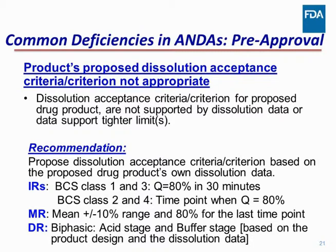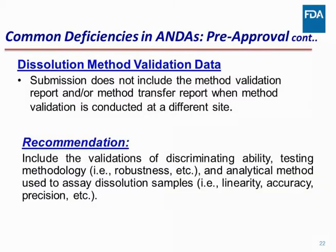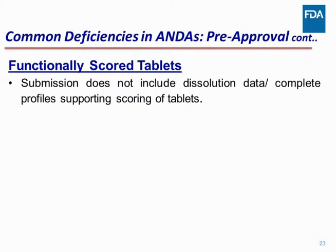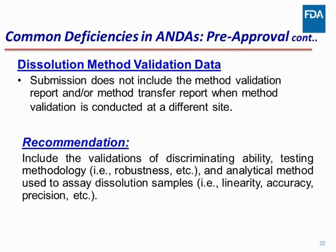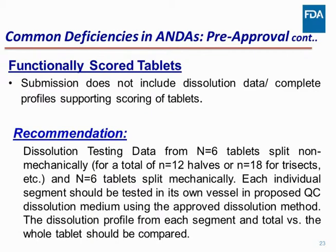For low-solubility drugs, draw a line at Q equals 80%. For low-risk products, you can use Q equals 80% in 30 minutes. And for modified release products, see how complex the profile is and pick up the points appropriately. If you do that, we will be happy to accept your proposed acceptance criteria. For DR products, we usually have two sets of acceptance criteria — for the acid phase as well as the buffer phase — depending on the design of the drug product. Regarding dissolution method validation — we want to see validation of both components: the method conditions as well as the analytical portion.